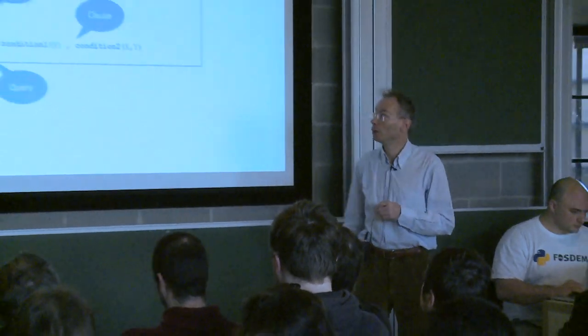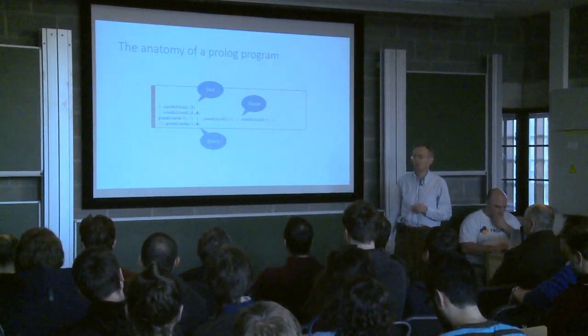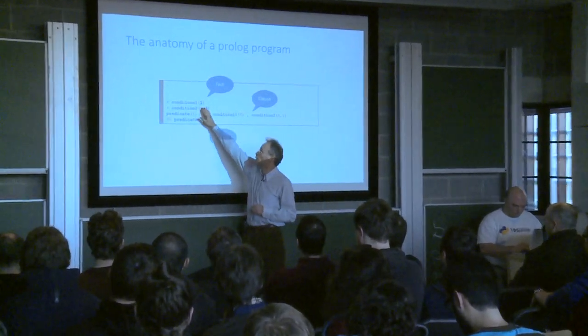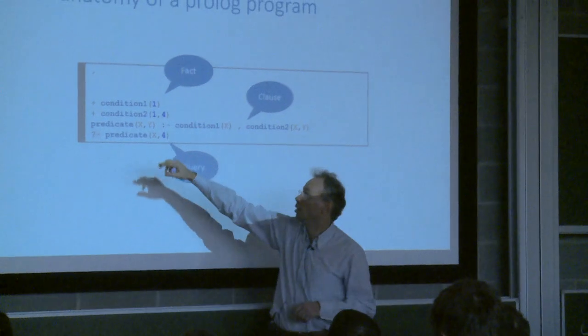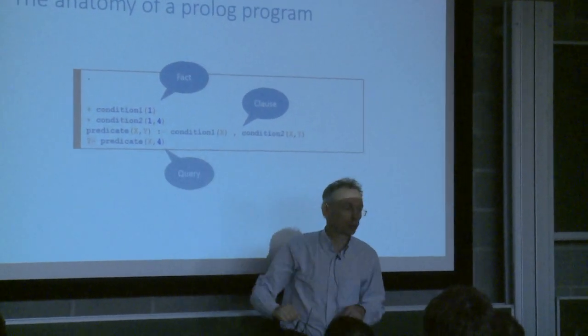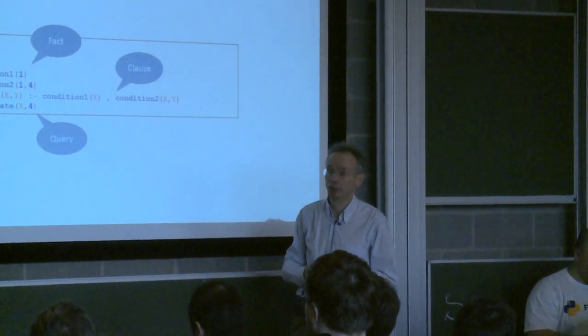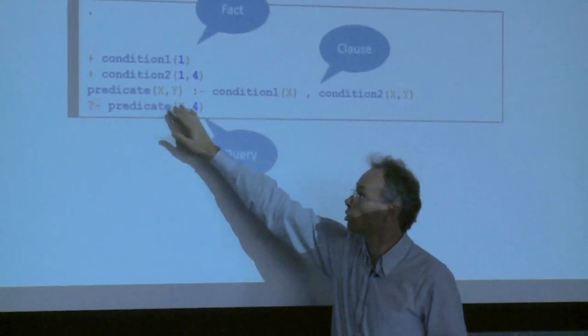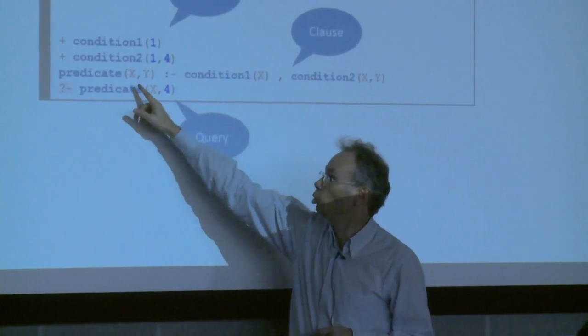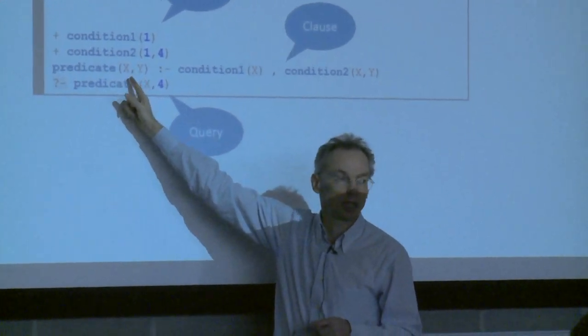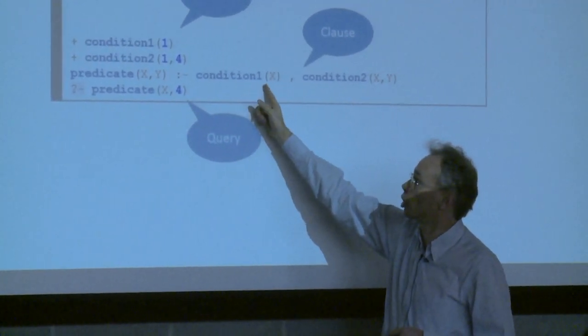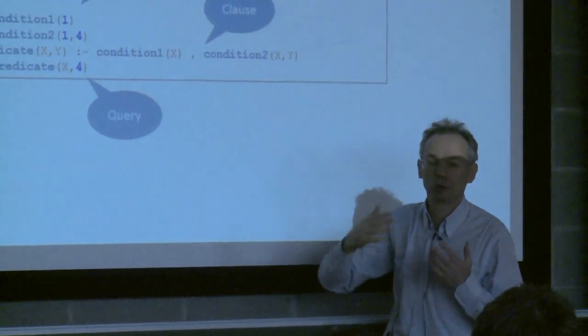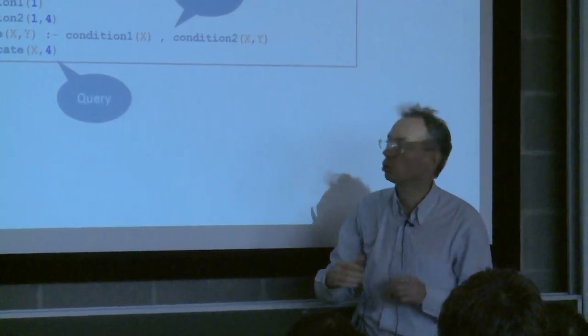So let's look at what does a logic programming program looks like? This is what you would see in a Prolog program. You have some statements that says that condition 1 is true if the first argument is 1, and condition 2 is true if the arguments are 1 and 4. This is what is called asserting a fact. It's just entering some data in the knowledge base. You can also define some predicates using a clause. And you read this as saying that to prove that x and y, that predicate with argument x and y is true, you have to check that condition 1 is true for x, and condition 2 is true for x and y. That's a way to write very general business rules or logic rules.